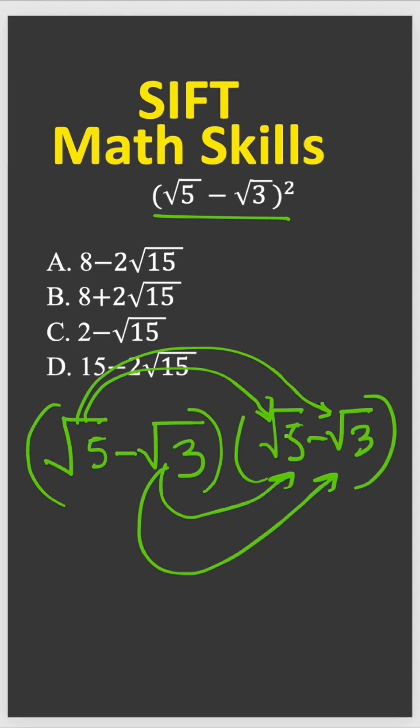So now, square root over 5 times square root over 5, that gives you just 5. Because square root over 5 times 5 is 25, which is just 5.